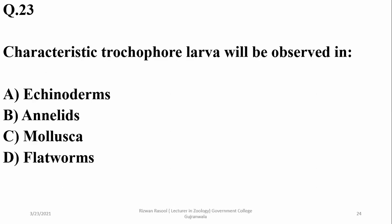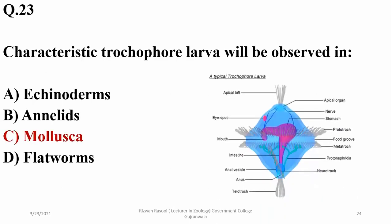Question seventeen: the characteristic trochophore larva is observed in phylum Mollusca.